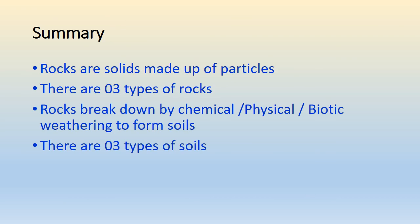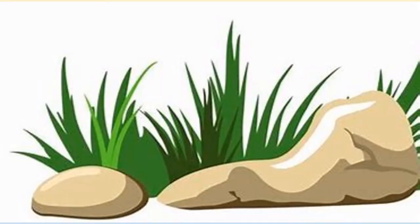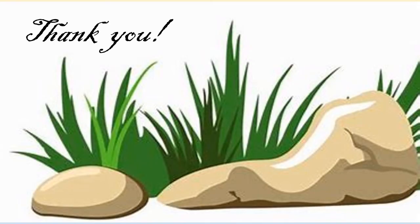Summary: Rocks are solids made up of particles. There are three types of rocks: igneous, sedimentary, and metamorphic. Rocks break down by chemical, physical, or biological weathering to form soils. There are three types of soils: clay, loamy, and sandy.